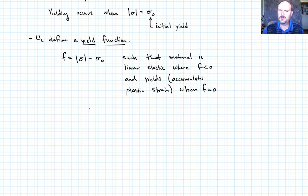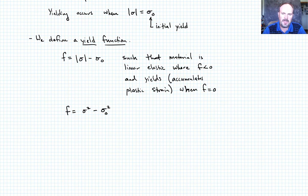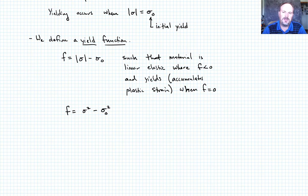We can also write the yield function without absolute values as f equals sigma-squared minus sigma_naught-squared. This gives the same yield condition — whenever the magnitude of stress reaches sigma_naught, f equals zero, indicating yielding and the onset of plastic strain accumulation.